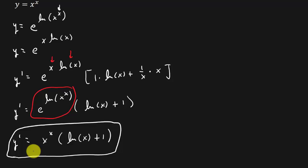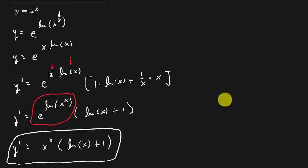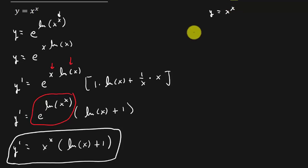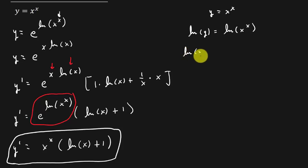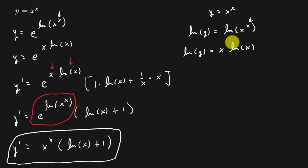Now let's do the second way and see if we get the same answer. What I'm going to do is take the natural log of both sides. So I've got natural log of y equals natural log of x raised to the x. Then I'll pull that exponent x down in front, giving me natural log y equals x times natural log x. Now let's take the derivative.